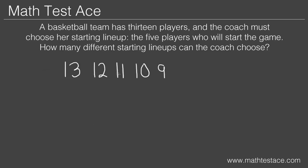The next step is to multiply all of these numbers together. With some help from a calculator, we find out that 13 times 12 times 11 times 10 times 9 equals 154,440.